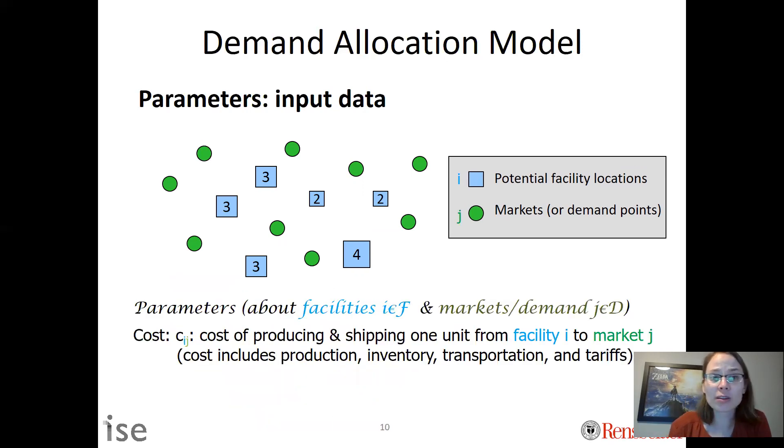The last piece of input parameter is cost, which is an interaction between the location, the facility, and the demand point. We would define something like Cij, which is the cost of producing and shipping one unit from facility i to market j. This can include many different things—the cost to produce and ship, maybe only shipping cost, maybe inventory cost or tariffs. You would need to know this for every i and j.